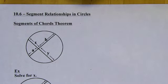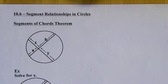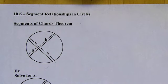10.6 is called Segment Relationships in Circles. A link to the guided notes is in the description below if you want to print it out and follow along. We start off with the Segments of Chords Theorem.